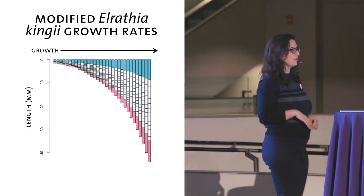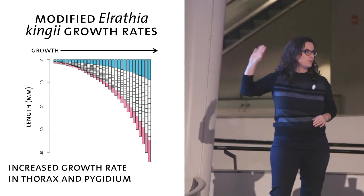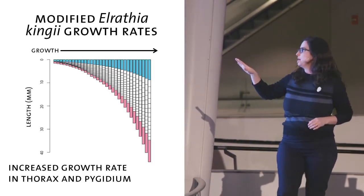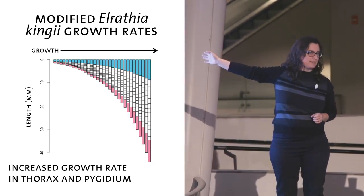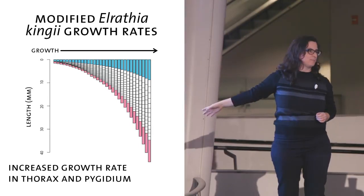If instead we change some of those growth rates, particularly the growth rates associated with the thorax and the pygidium, we can get a trilobite that is the same number of segments, 13, but is much bigger.